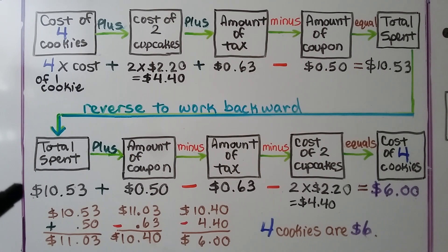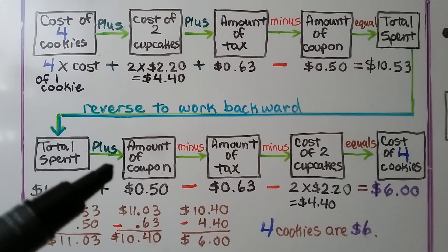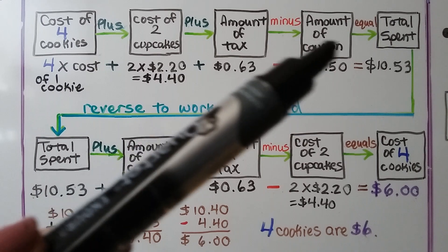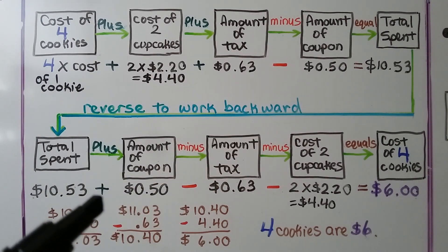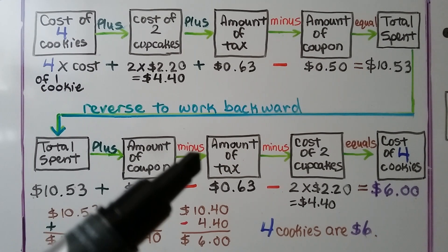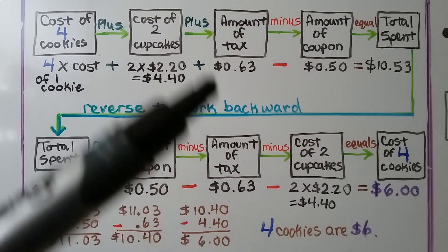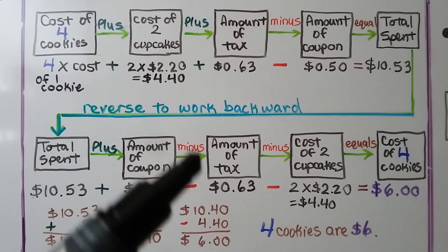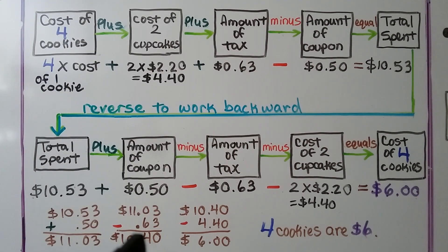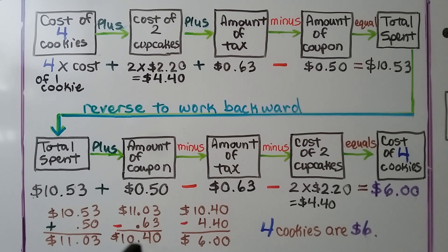$10.53 plus the amount of the coupon — since we originally subtracted it, we now add it back as the inverse operation — gives us $11.03. We need to subtract the amount of tax because we added it going forward, and subtraction is the inverse of addition. $11.03 minus $0.63 gives us $10.40.